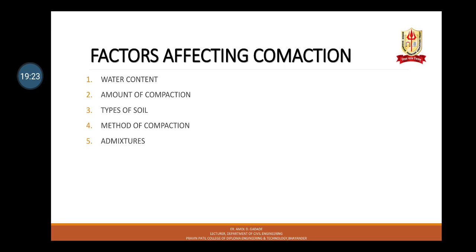The third factor is type of soil. A well-graded coarse-grained soil can be compacted to a higher degree compared to uniform soil for the same compaction effort. As the soil tends towards finer grain nature, the optimum moisture content values go on increasing and MDD values go on decreasing for the same compaction effort. The fourth factor is method of compaction, which is also an important factor. The dry density depends not only on the amount of compaction, type of soil, and moisture content, but also on the method of compaction, manner of operation, time, and contact area between soil and equipment.